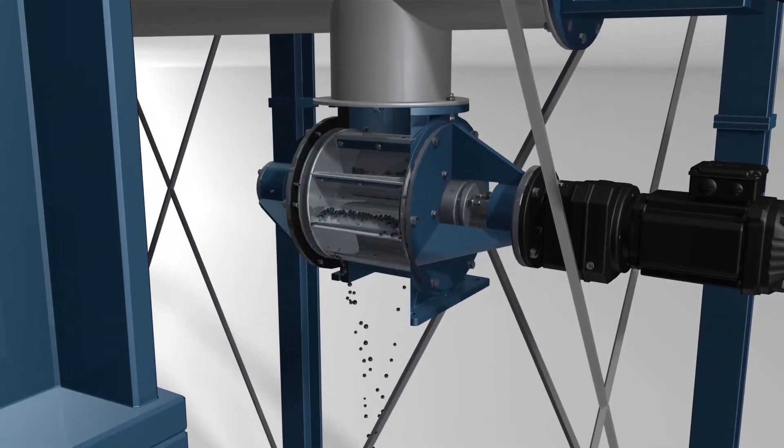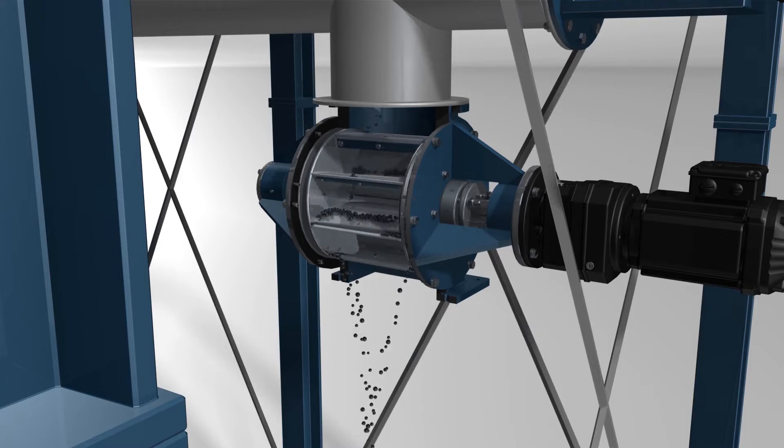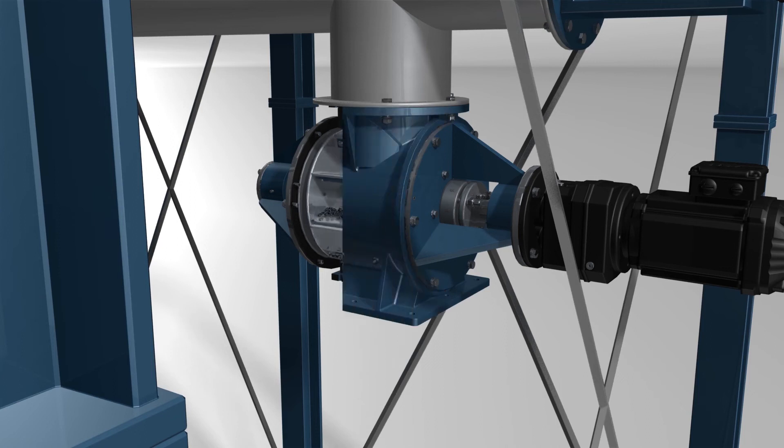The dust is discharged from the hopper and screw conveyor by a rotary valve. Below the rotary valve conveying systems or big bags can be connected.